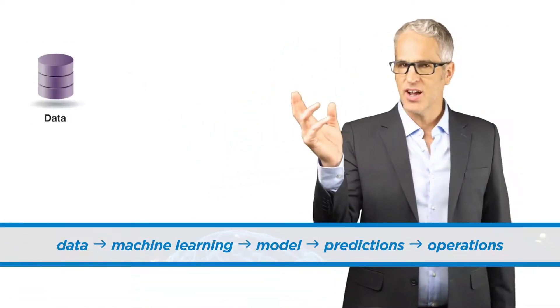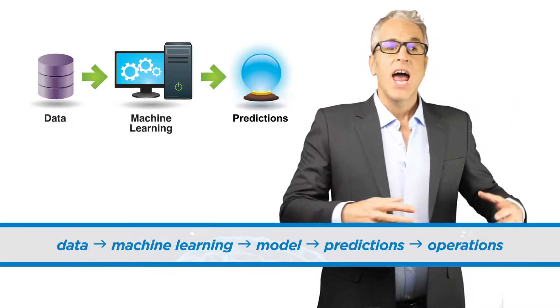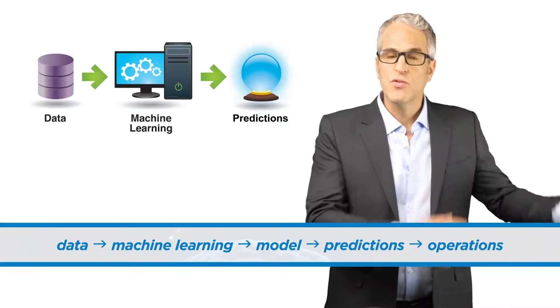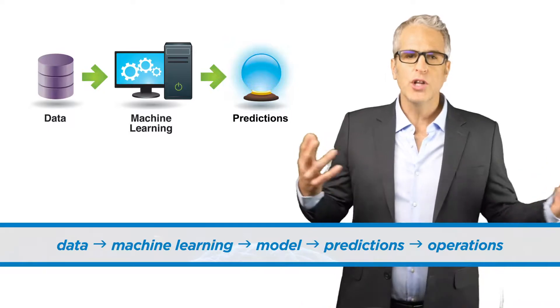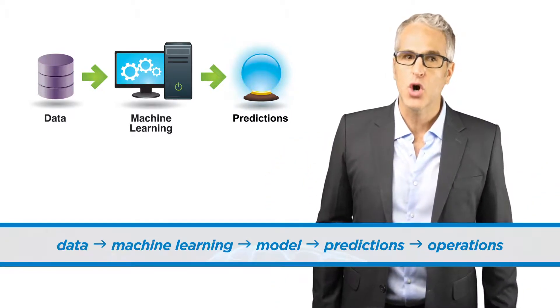Putting that in reverse, we have data, we give it to machine learning, it makes models that predict, and we use the predictions to improve all the main stuff we do, all the large-scale operations of organizations that make the world go round.